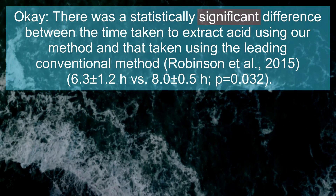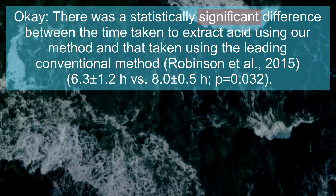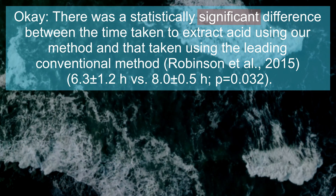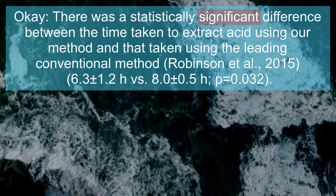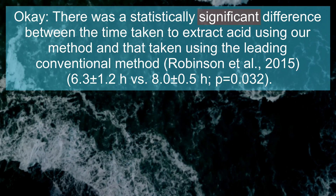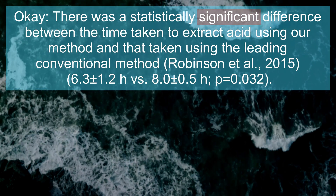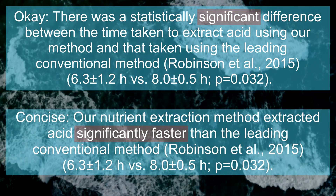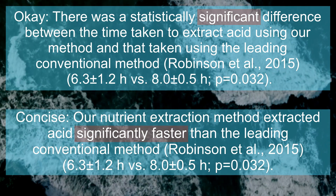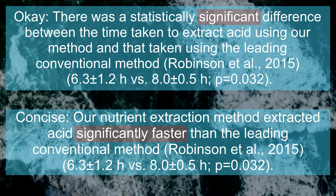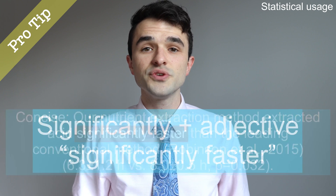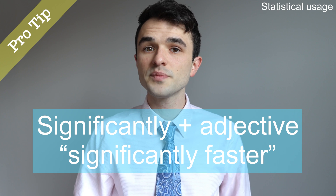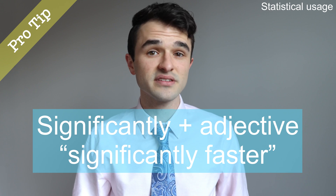Time for a pro tip. An okay sentence is: there was a statistically significant difference between the time taken to extract acid using our method and that taken using the leading conventional method. But in research writing, concise sentences are preferred. So I revised this to: our nutrient extraction method extracted acid significantly faster than the leading conventional method. The sentence with 'significantly faster' is clearer. Using significantly with an adjective helps readers easily understand what has been significantly compared.